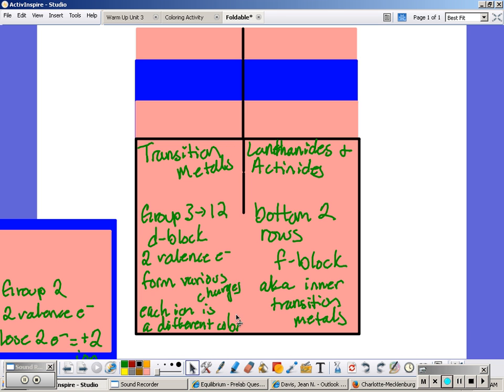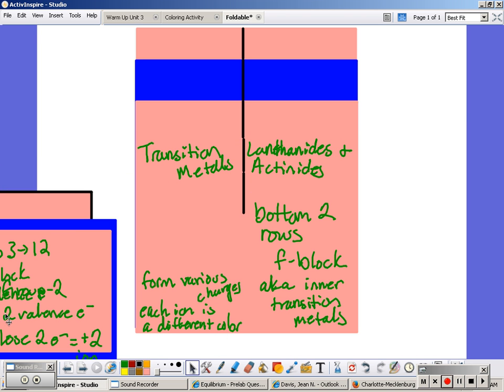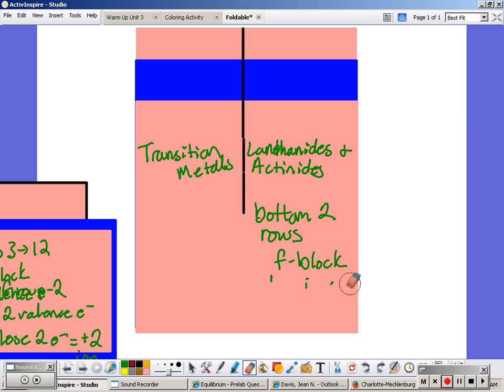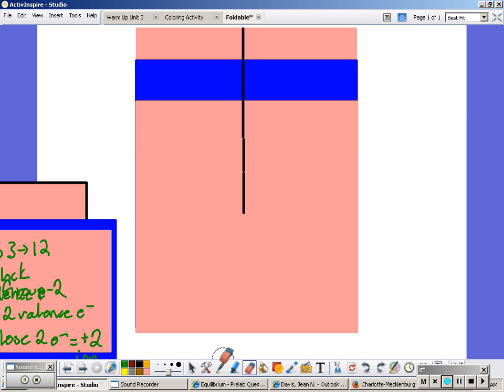So again, move to the next piece of paper, draw a line straight down, and we're going to title these two sections halogens and noble gases. Where the information would be hidden, you want to write this down so you can quiz yourself.